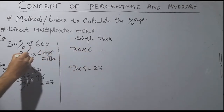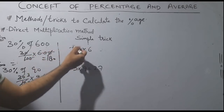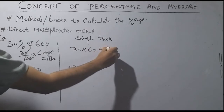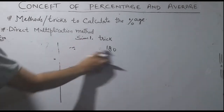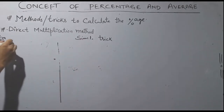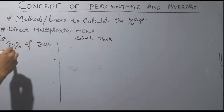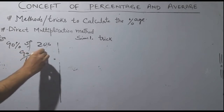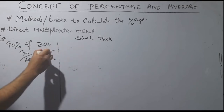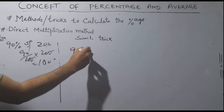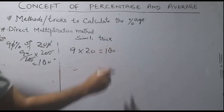For example, 90% of 200: that is 90 divided by 100 into 200. Cancel zeros and get 9 × 20 = 180. So 90% of 200 is 180.